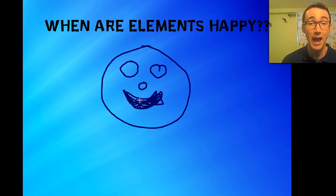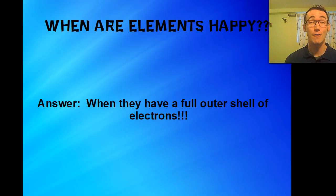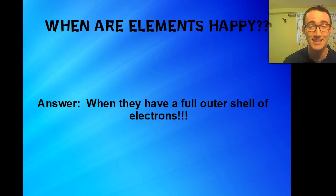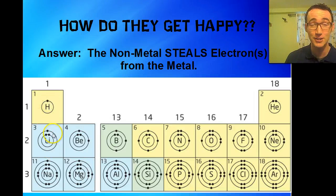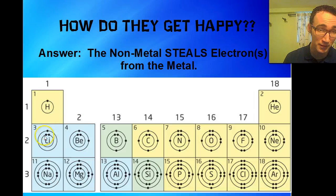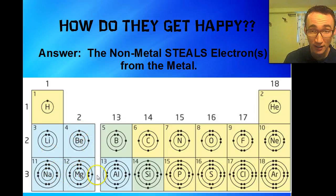So how can an element get happy? The answer is when they have a full set of outer electrons — a full outer shell of electrons. Here we have some Bohr-Rutherford diagrams that show the electrons of an element. You can see the outer shell of them right here. In this first group, they have one electron in its outer shell. The second group have two electrons in their outer shell, and so on.